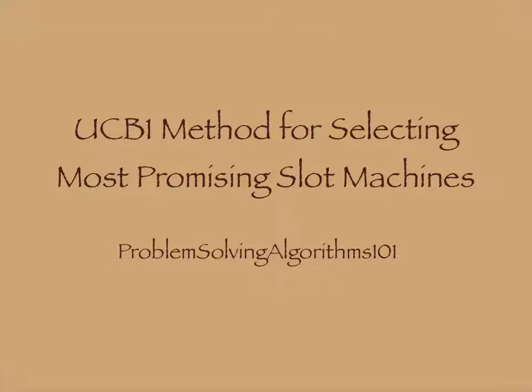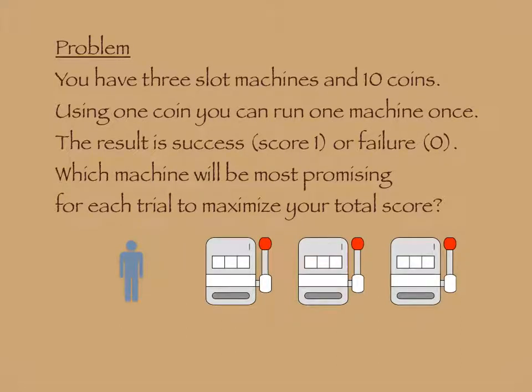UCB1 Method for Selecting Most Promising Slot Machines. Problem: You have 3 slot machines and 10 coins.